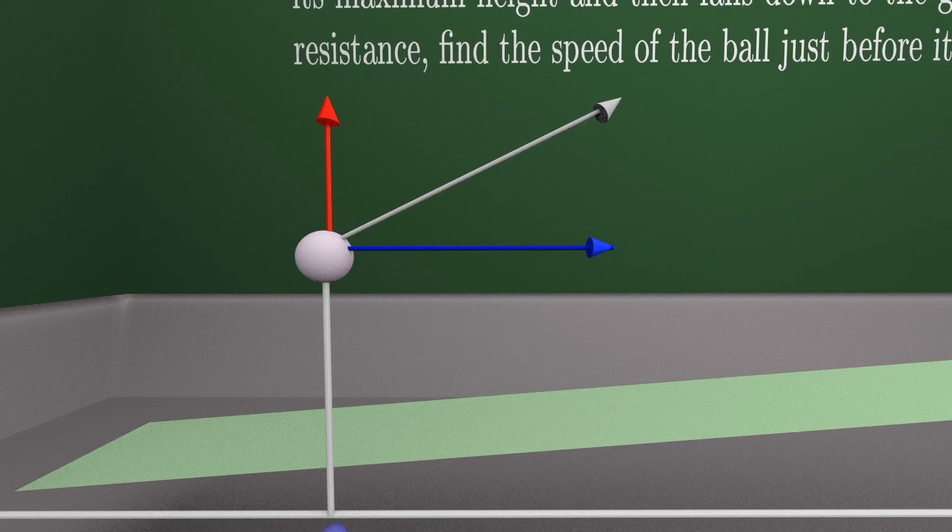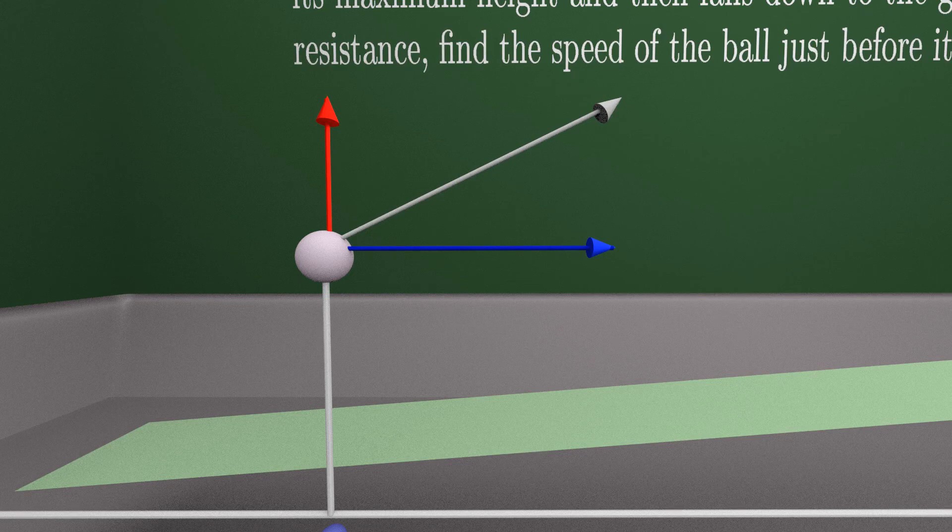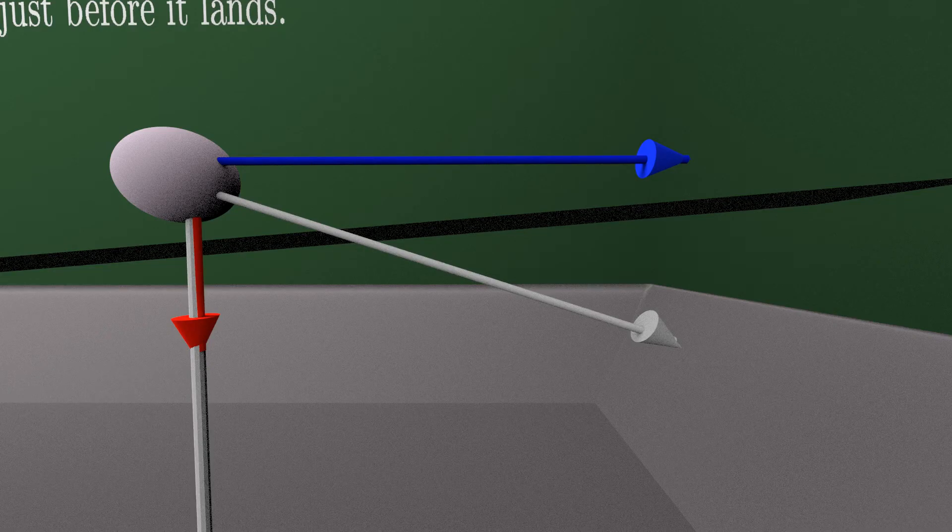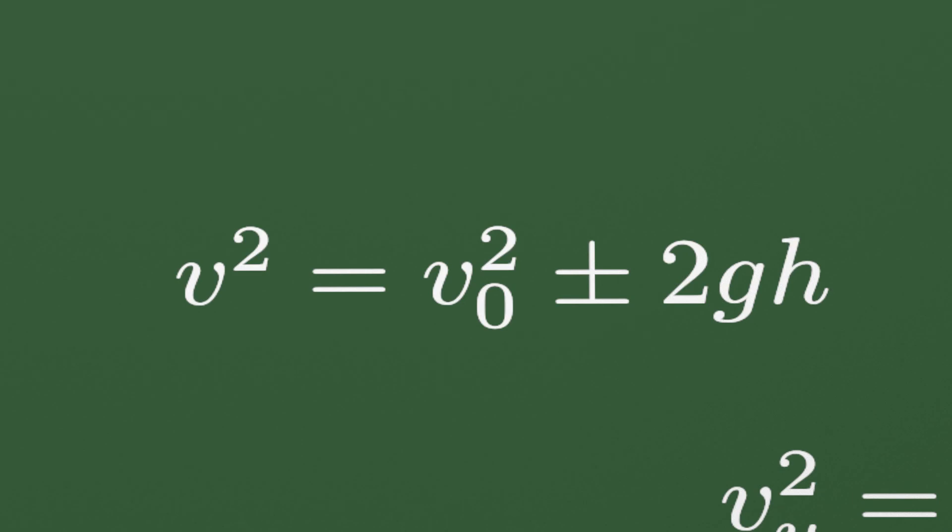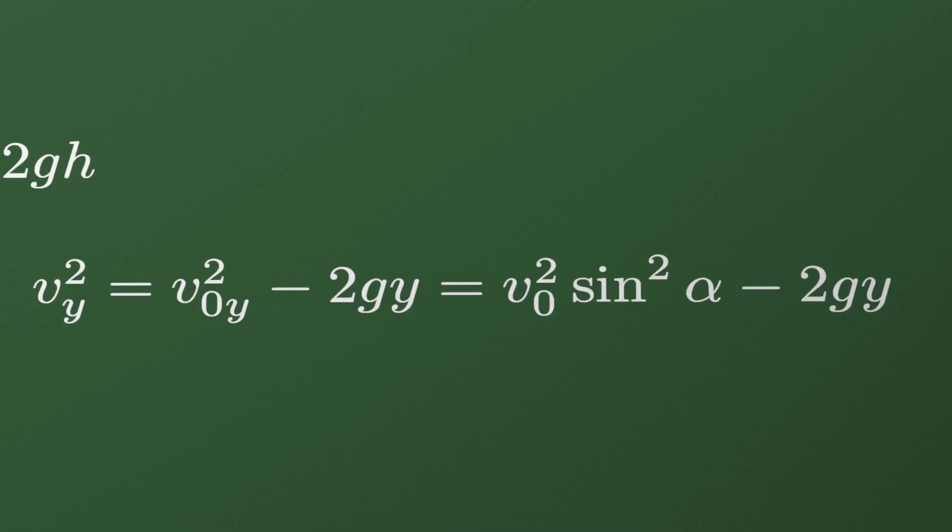Here, it's the same height as here, and it is 3 meters above the x-axis. Using one of the kinematic equations for the accelerated motion, we will have that Vy squared is V0y squared minus 2gy. Minus is because the ball is moving up and acceleration is pointing down.